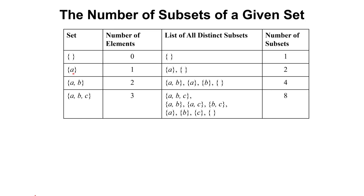For a set containing one element {a}, the number of elements is 1. The subsets are the set itself and the empty set, giving a total of 2 subsets. For the set {a, b} with two elements, the subsets are: the set itself, the empty set, {a}, and {b} — giving us 4 subsets total.